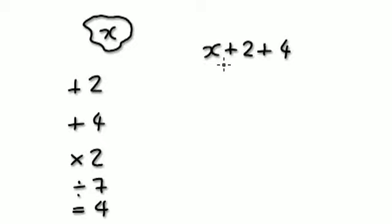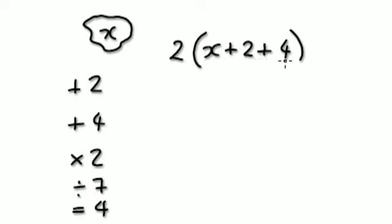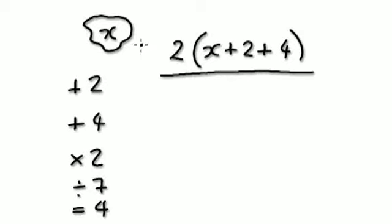So let's start again. I'm thinking of a number, I add 2, then add 4, then times by 2 — because I need to know everything in the bracket first before I times by 2. Then, final step, I need to know everything above this divide line, and then divide it by 7. That equals 4.